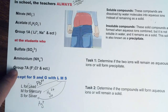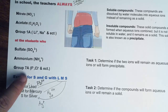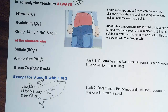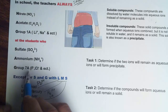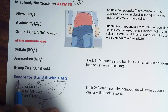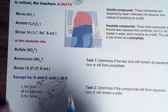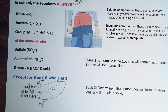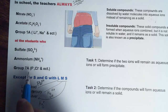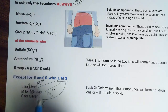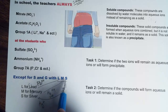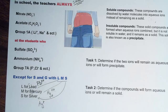The second G in SAG is for Group 7A, which is the halogens. For Group 7A, we have to use the exception with LMS. When the ions in Group 7A bond with LMS, the compound will be insoluble.